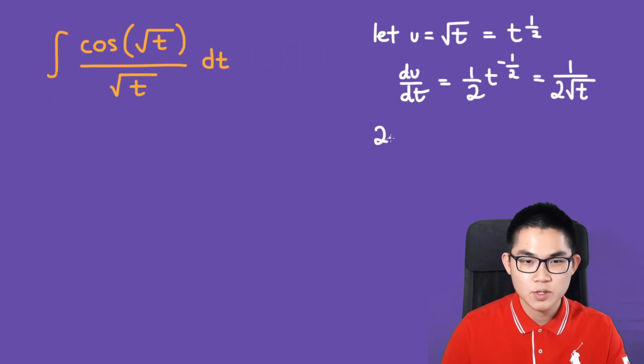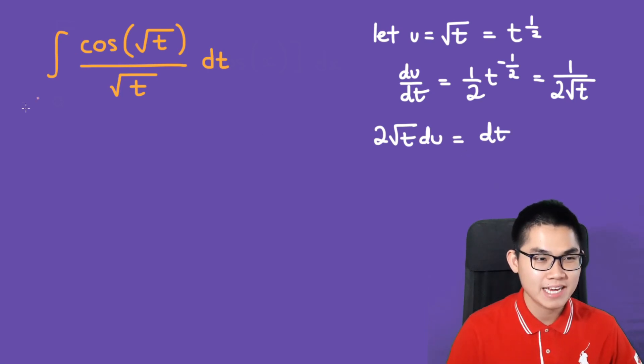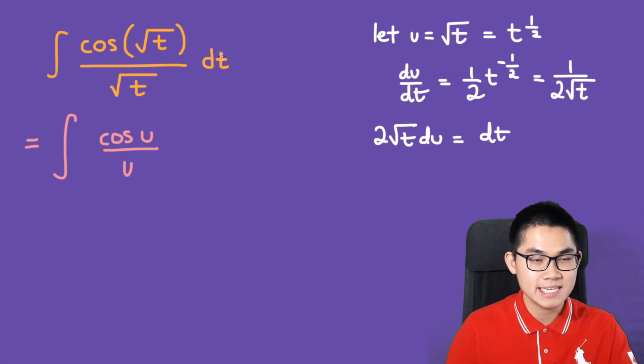So this means 2√t du equals dt. Let's go ahead and substitute it back into this integral. So we have the integral of cos u over √t, which is also u. And how about this dt here?